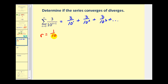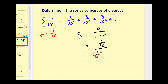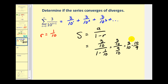Since the absolute value of r is less than one, this will converge to the first term divided by one minus r. So we have three-tenths divided by one minus one-tenth, which is three-tenths divided by nine-tenths. This is the same as three-tenths times the reciprocal, ten-ninths, which simplifies to one-third. Therefore this infinite series converges to one-third.